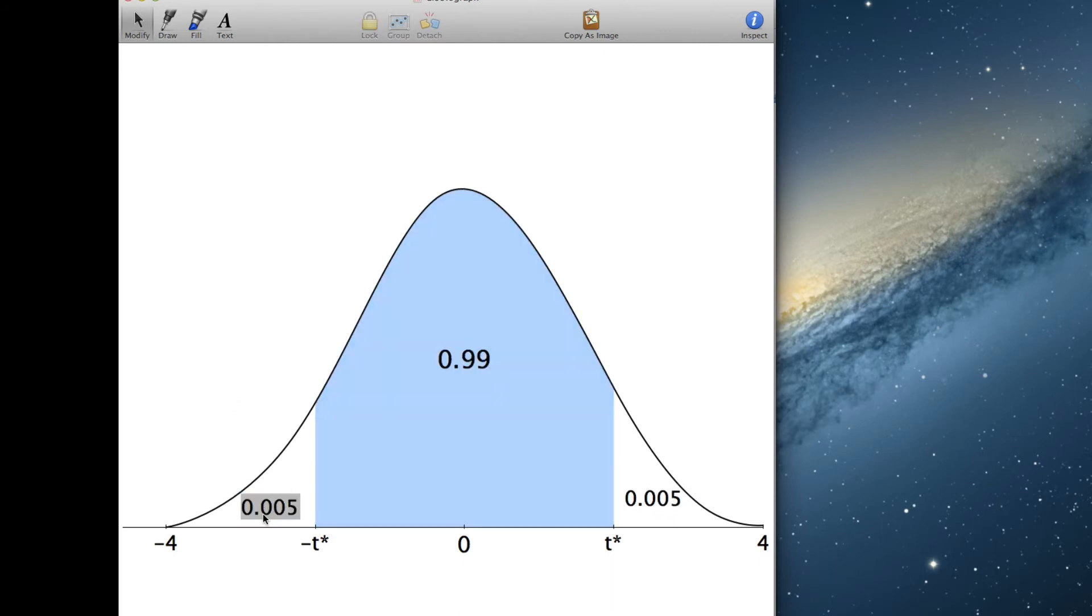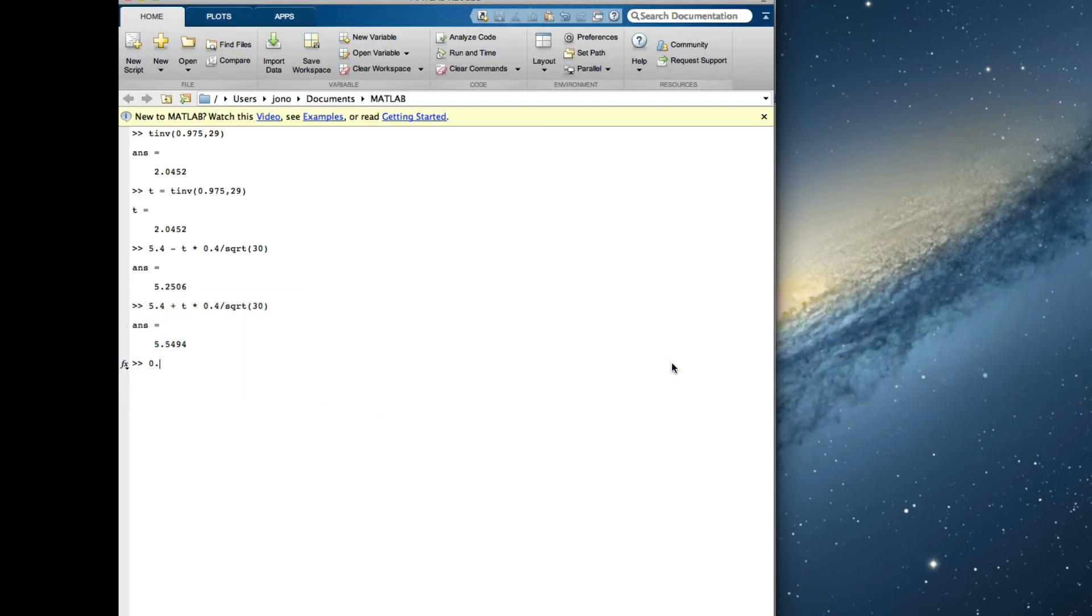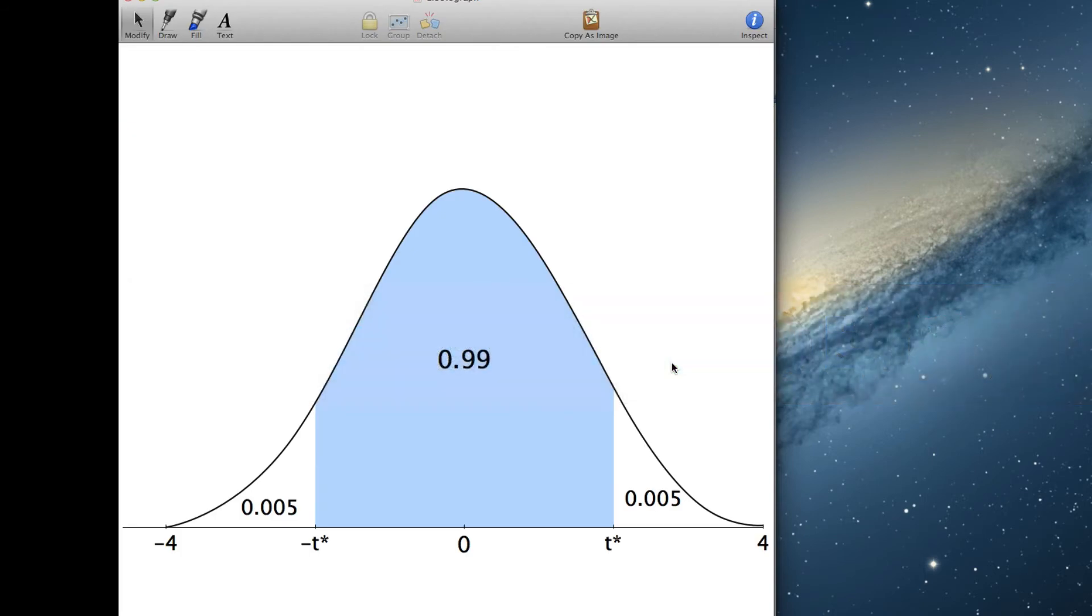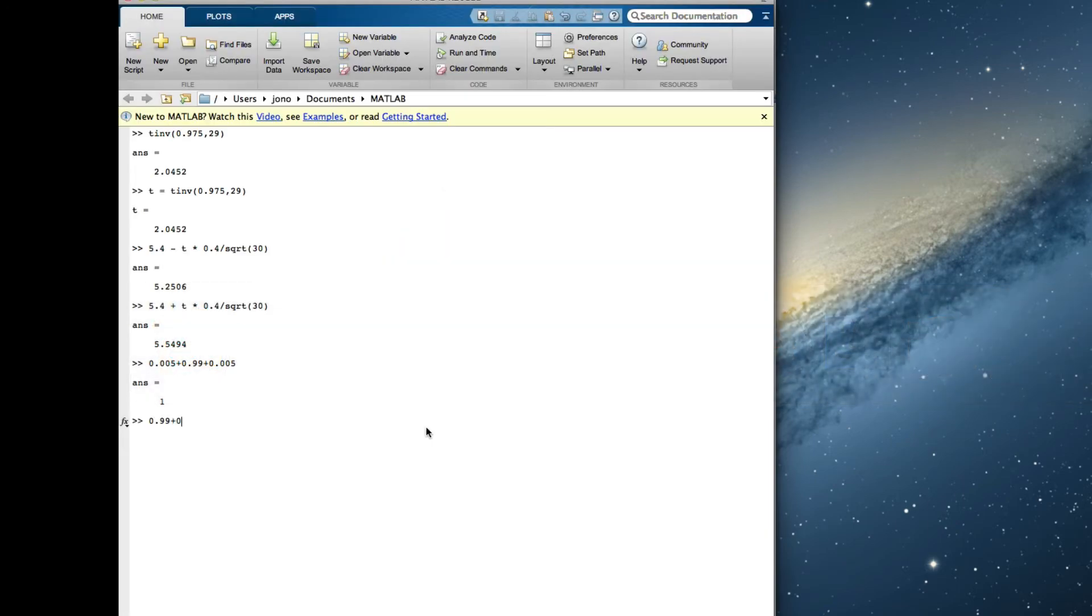So, we've got this one, is equal to this one, and these three should add up to 1. So, now if I want t star, I want the area to the left of this, which is going to be 0.99, plus 0.005, which is going to be 0.995. So, I've got t inverse, 0.995, degrees of freedom 30 minus 1, which gives us 29. So, still closest to 2, but as you can see, slightly bigger number.